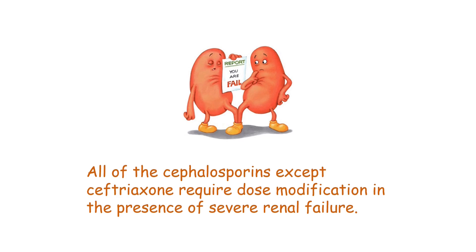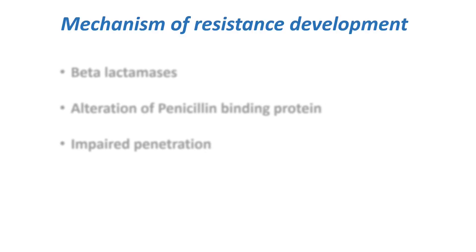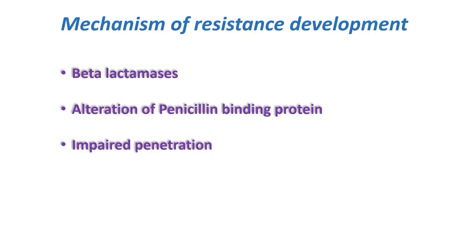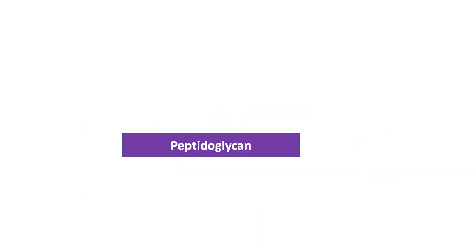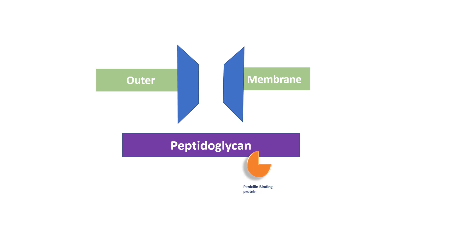The mechanisms of resistance of cephalosporins are similar to those of penicillins. Production of beta-lactamase enzyme by bacteria can cause dissolution of the beta-lactam ring of cephalosporins, causing resistance. There can also be mutation of porin channels in the outer membrane of gram-negative bacteria, conferring impermeability to cephalosporins inside the periplasmic space. Additionally, the site of action of cephalosporins — i.e., penicillin-binding proteins — can be altered due to mutation, thus causing resistance.